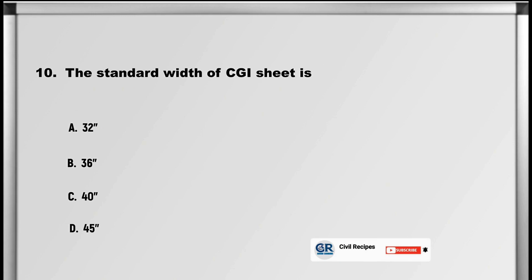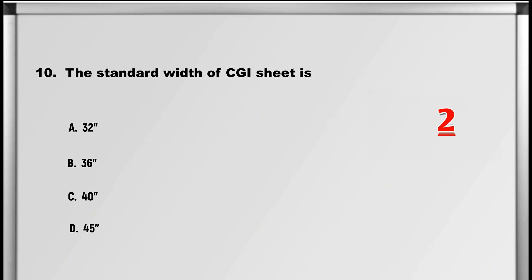Let's move on to question number 10: The standard width of CGI sheet is: A. 32, B. 36, C. 40, D. 45. Answer: B. 36.